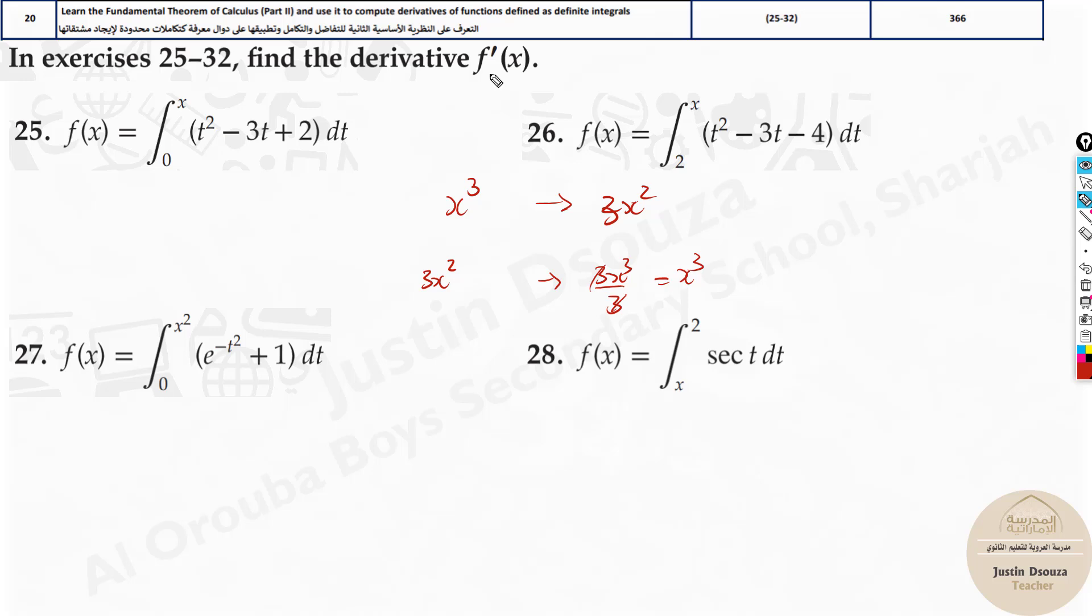So now over here, you have to find the derivative. This is integral thing, right? So all you need to do is leave this function as it is, because that itself is derivative, but all you need to do is substitute the upper limit. Now what happens over here is, whatever it is with respect to t, right? Just substitute the upper limit, it will become x squared minus 3x plus 2. That's the answer.